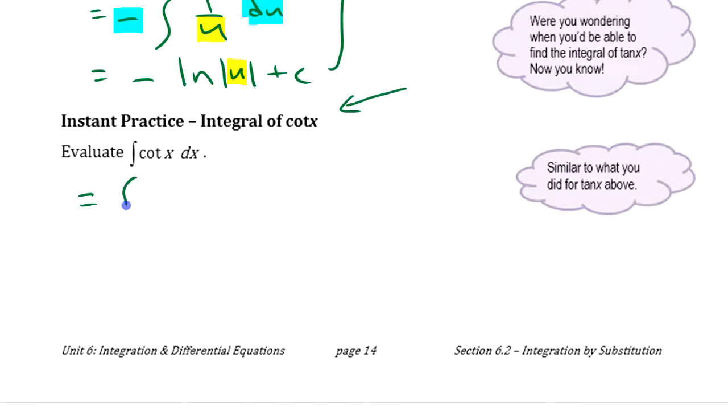For the integral of cotangent, change it to cosine over sine using trig identities. That allows us to write it as 1 over sine times cos x dx.